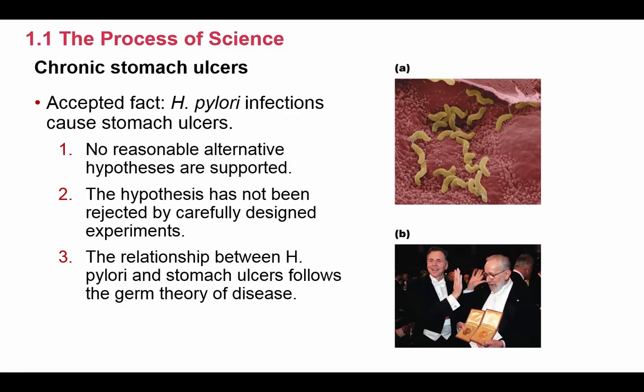Why do we accept it? Because there's been no reasonable alternative hypotheses supported. This hypothesis has not been rejected by any carefully designed experiments. And so, the relationship between H. pylori and stomach ulcers follows the germ theory of disease. That's an example of a scientific theory.